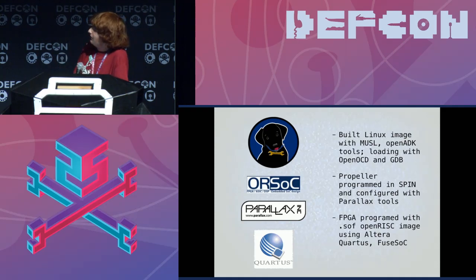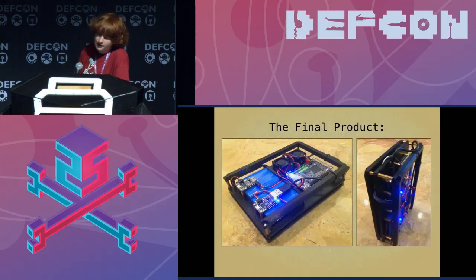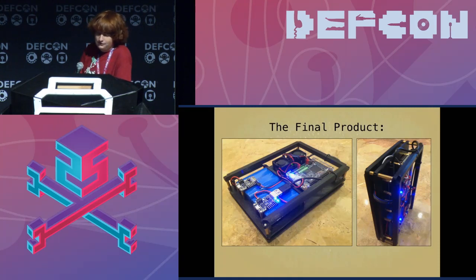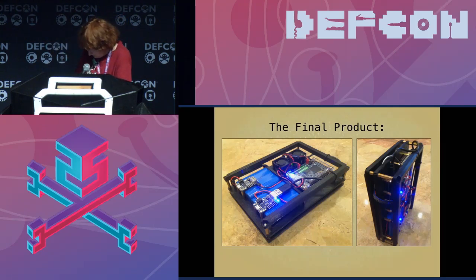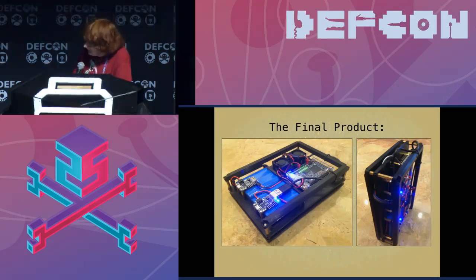Now onto the results. The results are a bit complicated. We have the final product here — in the upper right, kind of middle of the first picture — you can see the DE0-Nano under those two fans. We have the Parallax Propeller. The fans are providing some downdraft airflow to cool the thing off. We've got two batteries in there to power the thing, which are a bit overkill.